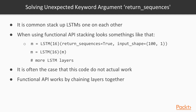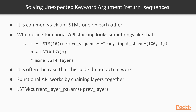The functional API works by chaining layers together. For every LSTM layer, we have two sets of parentheses when designing any given layer. The first set contains the current layer parameters, like return_sequences. Then after we initialize this layer, we provide the previous layer in the second set of parentheses — that's how we go through the sequence.